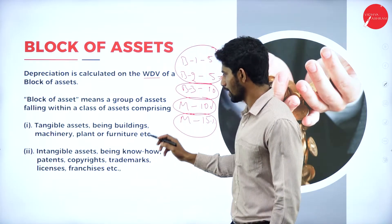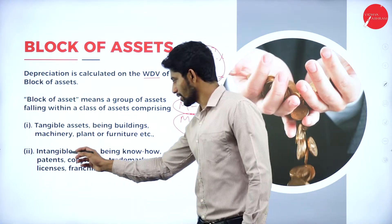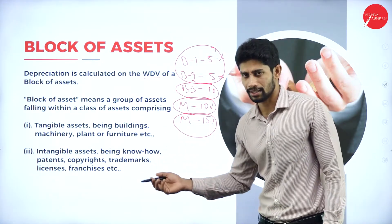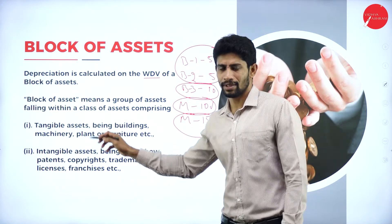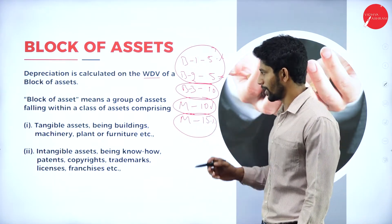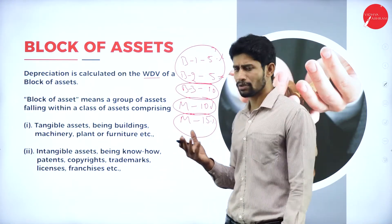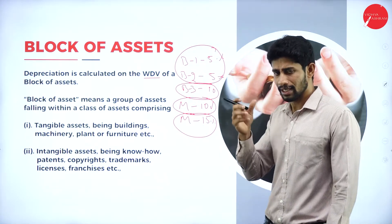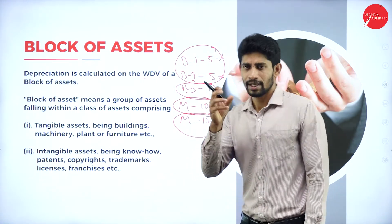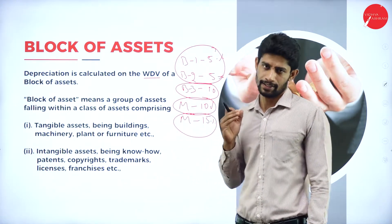Tangible assets include buildings, machinery, plant, or furniture. Intangible assets include know-how, patents, copyrights, trademarks, licenses, franchises, etc. Block of assets means a group of assets falling within a class of assets comprising tangible or intangible assets. Buildings attracting the same rate of depreciation come under one block of asset; if they attract different rates, they fall under different blocks.